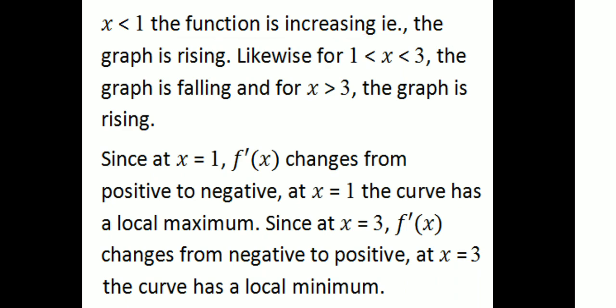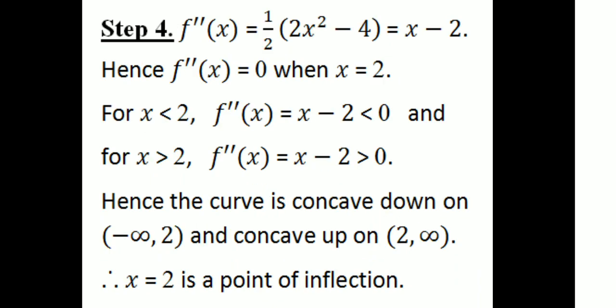f'(x) = 0 when x = 1 or x = 3. For x less than 1, the function is increasing — the graph is rising. For 1 < x < 3, the graph is falling. For x greater than 3, the graph is rising. Since at x = 1, f'(x) changes from positive to negative, the curve has a local maximum at x = 1. At x = 3, f'(x) changes from negative to positive, so the curve has a local minimum value at x = 3.